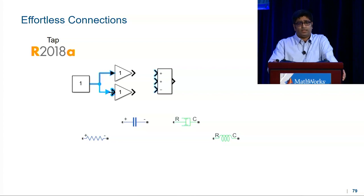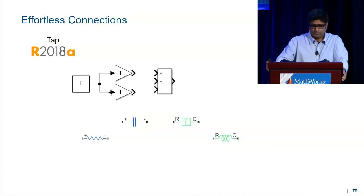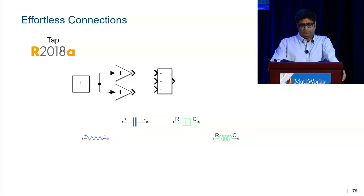This works with lines and not just ports, and it's fully domain aware. What I mean by that is when I click on an electrical port, only the electrical ports are highlighted. The mechanical ports are not highlighted, and I can see the preview just for the electrical ones. So let me make that connection. And when I do this for mechanical ports, obviously only the mechanical ports are highlighted.